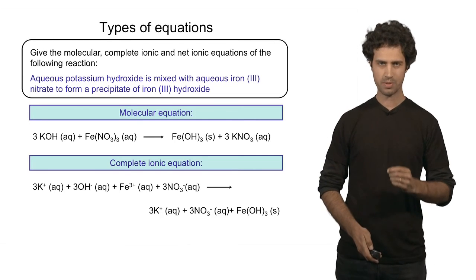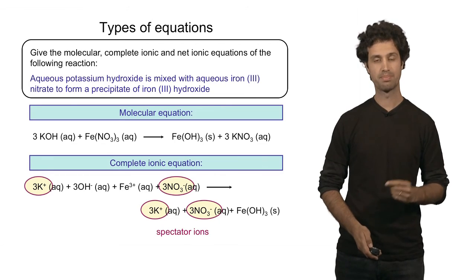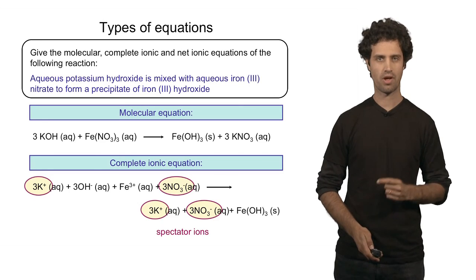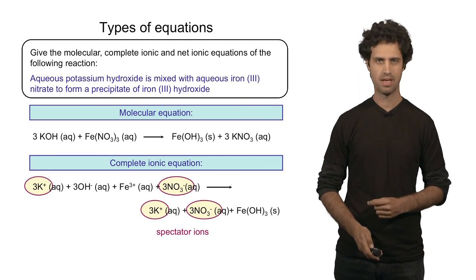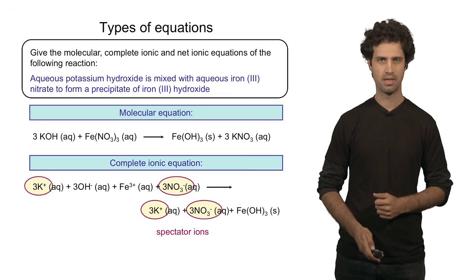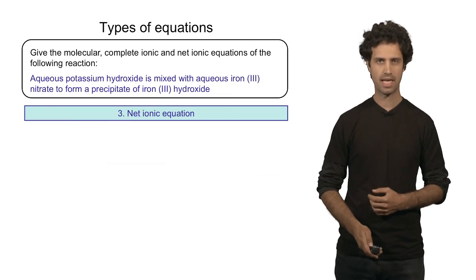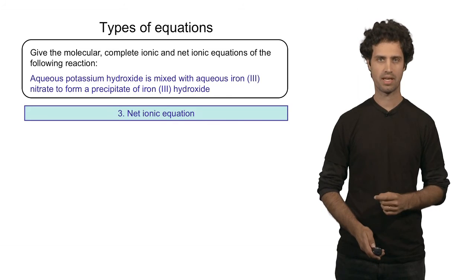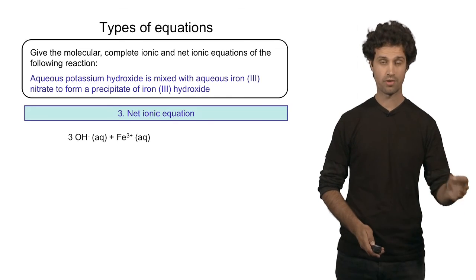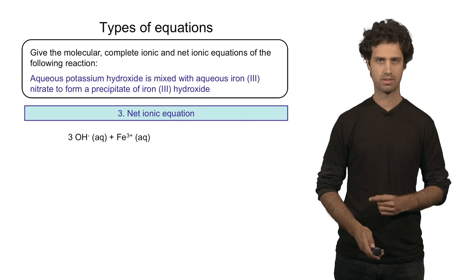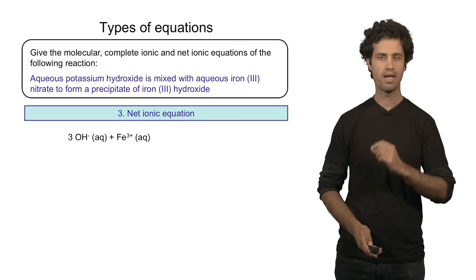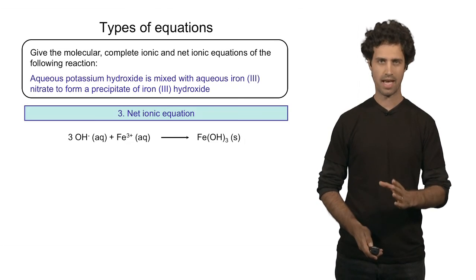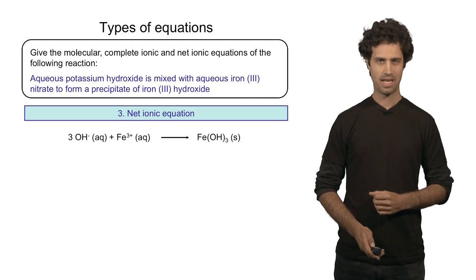Which ions are spectator ions? We find potassium ions both on the left and right side of the equation, and nitrate anions on each side as well. So both potassium and nitrate are spectator ions. Leaving them out gives us the net ionic equation, where only the interacting ions appear: 3 hydroxide anions and 1 iron 3 plus cation, forming the precipitate iron 3 hydroxide. All spectator ions are not shown in the net ionic equation.